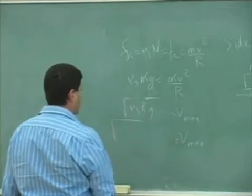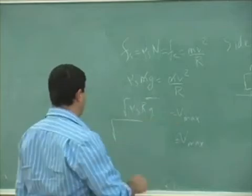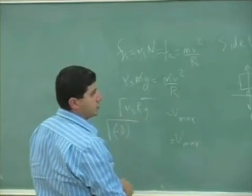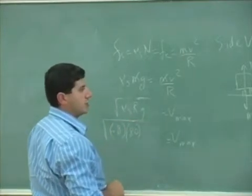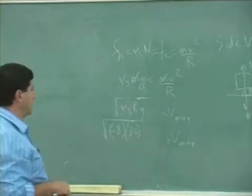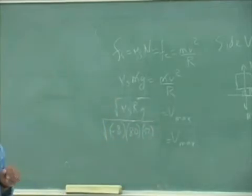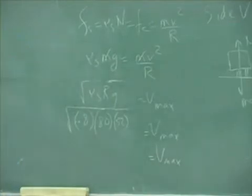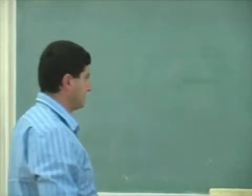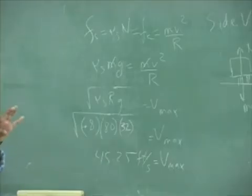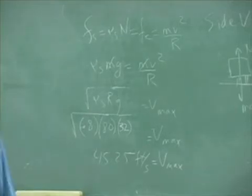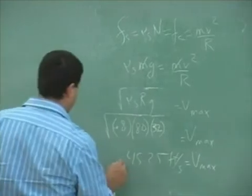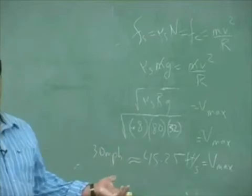And then we have here square root of, now we can put in all the numbers. Mu s is equal to 0.8. R is equal to 80. G is equal to, this one we're going to have to use 32 because the radius is given in feet. So do all that. Tell me what you get here. This is the maximum velocity. Which is about close to, I think that's close to about 60 miles an hour is 88 feet per second. This is going to be close to 30 miles an hour, almost 30 miles an hour. So that's how fast you can go maximum.